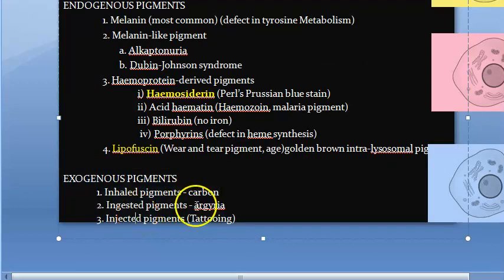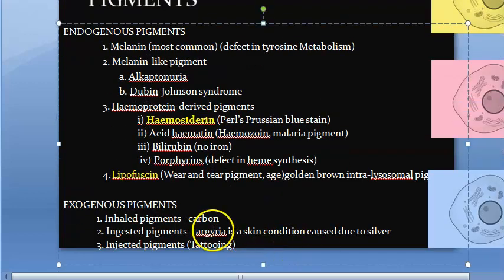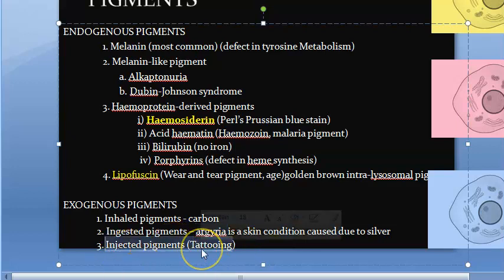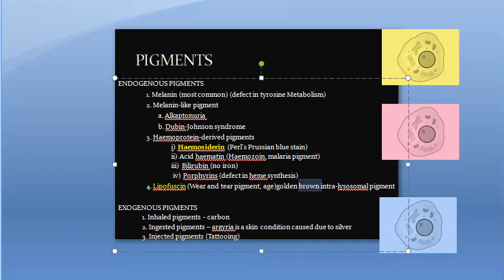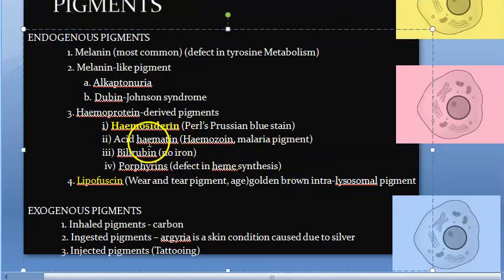There are also pigments that come from outside. For example, we inhale carbon, we ingest some pigments, a lot of which can cause argyria — for example, if you ingest silver or silver dust it causes argyria, which is a skin condition. We also put tattoos on our body, bringing color into it. So we have endogenous pigments and exogenous pigments.